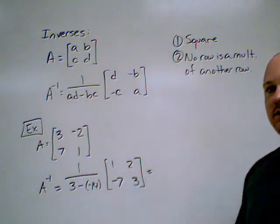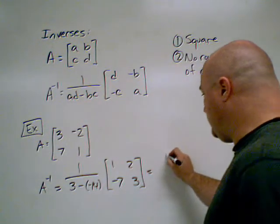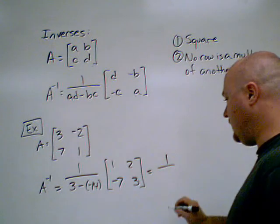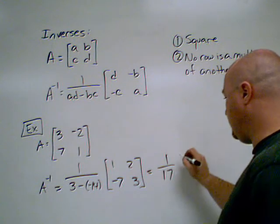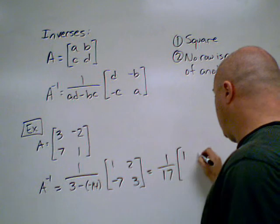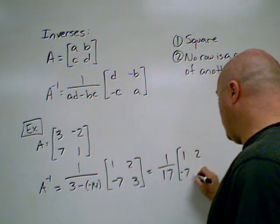Now we adjust this. We simplify it. 3 minus negative 14 is 17. And we carry over our matrix here.